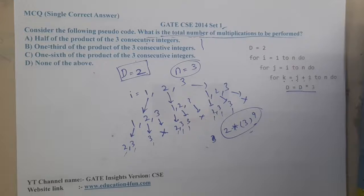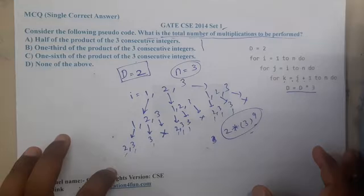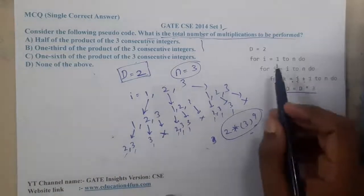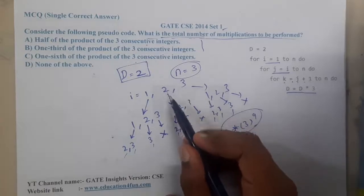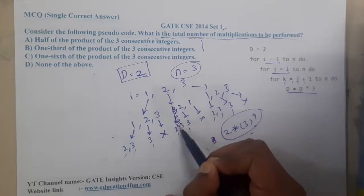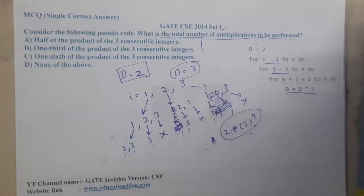After observing for some time I found a silly mistake here. Basically here it started at 1 and here it started at i. So basically for 2 there is no chance for this thing. Similarly for 3 there is no chance of these things.